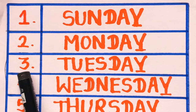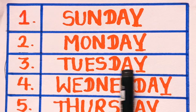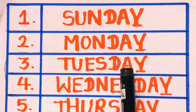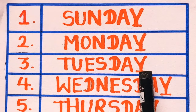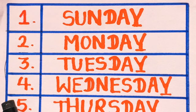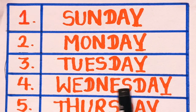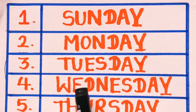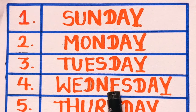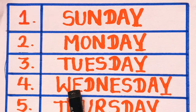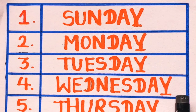Number 3, Tuesday. T, U, E, S, D, A, Y. Tuesday. Number 4, Wednesday. W, E, D, N, E, S, D, A, Y. Wednesday.